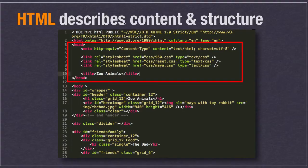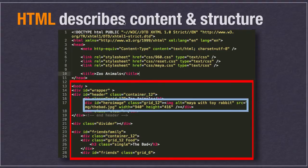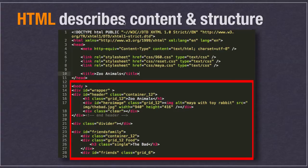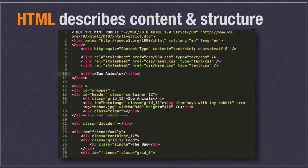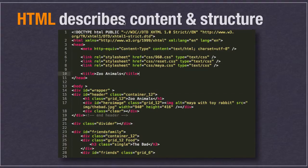Metadata just means data about data — so this is data about your page. Then starting around line 13 is the body, where HTML starts describing the content of the page: here is a title, here is a paragraph, here is an image. We also use tags to group elements together — a title, a paragraph, and an image that are all related get grouped under one tag, so it's tags within tags, and everything on your page gets marked up in a tag.